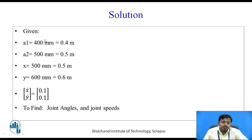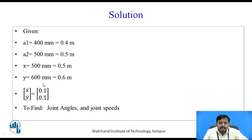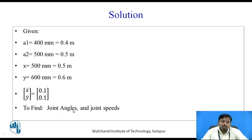Converting all values to meters: a1 = 0.4 m, a2 = 0.5 m, x = 0.5 m, y = 0.6 m. The end effector velocity vector [x-dot, y-dot] = [0.1 m/s, 0.1 m/s]. We are required to find the joint angles theta-1 and theta-2, and the joint speeds theta-1-dot and theta-2-dot.